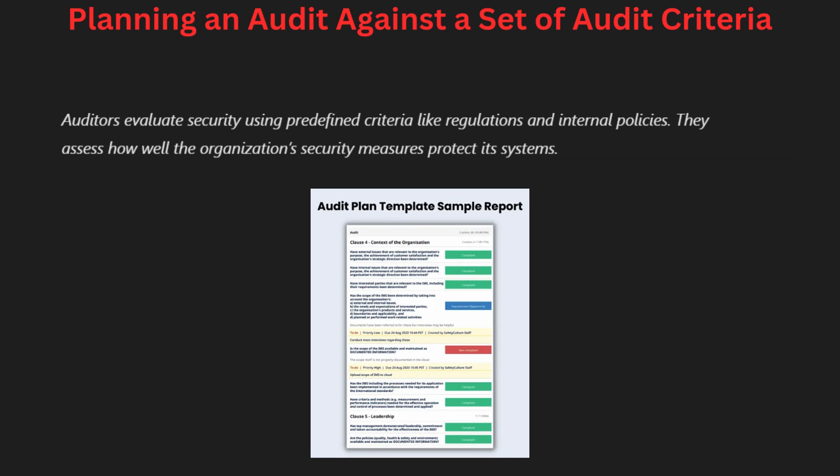Effective communication with stakeholders is essential to align expectations and objectives. During the audit, auditors must document their findings meticulously for future reference. The final report will highlight strengths, weaknesses and recommendations for improvement. Establishing audit criteria ensures that the evaluation process is systematic and thorough, and proper planning contributes to a successful audit outcome.